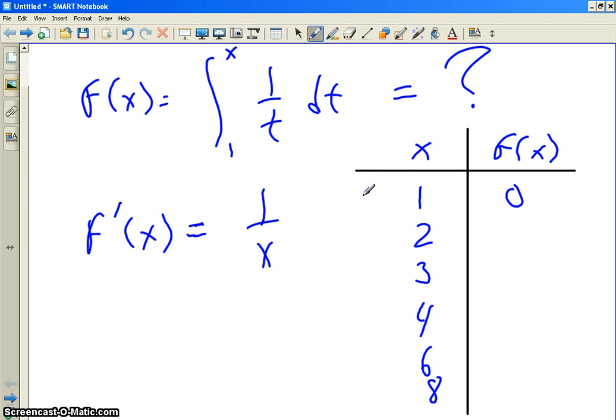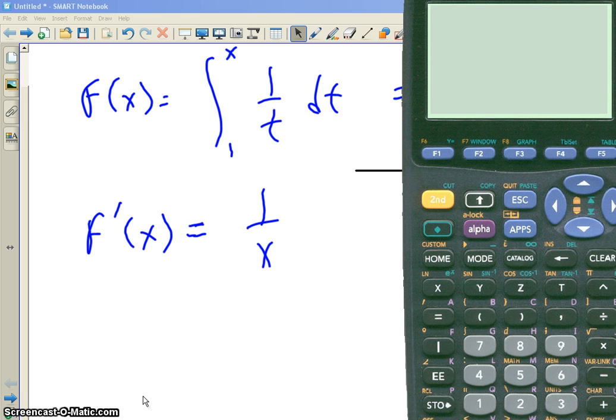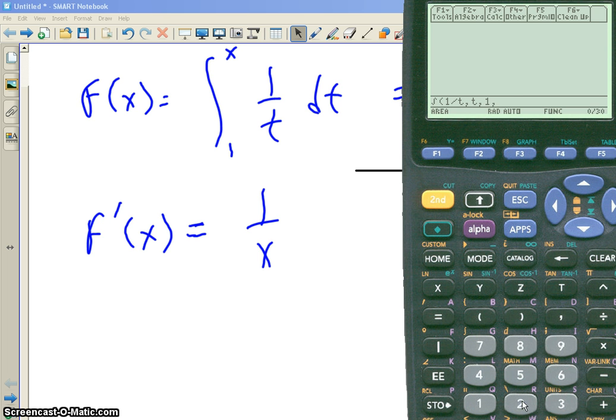So I'm going to do second 7 of 1 over t with respect to t from 1 to 2. And now I'm going to do a diamond enter because Hal knows the answer and I don't want to give it away. I'm just going to get some decimals. And I get 0.693, which is a very famous irrational number. In fact, it's a transcendental number.